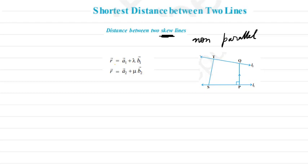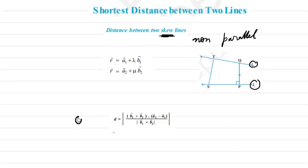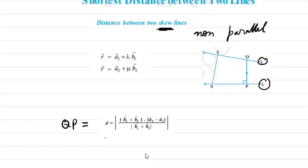Let's say we have two line equations: r = a1 + λ*b1 and r = a2 + μ*b2. Here l1 and l2 are not parallel. The formula for the shortest distance d is: d = |(b1 × b2) · (a2 − a1)| / |b1 × b2|. You get a1 and a2 from the equations, b1 from the first equation, and b2 from the second.